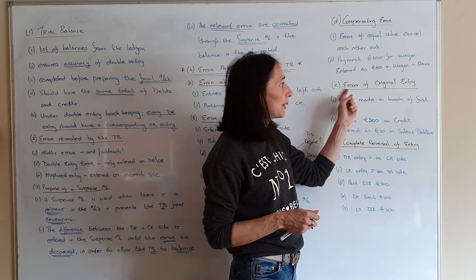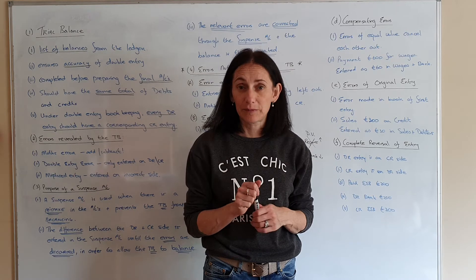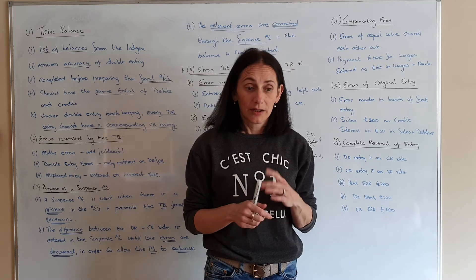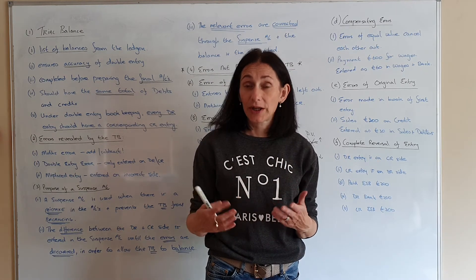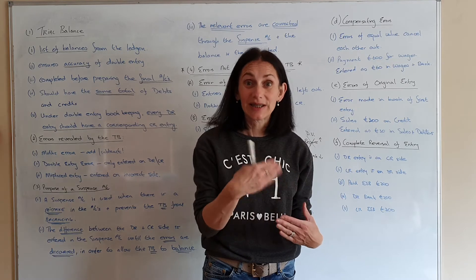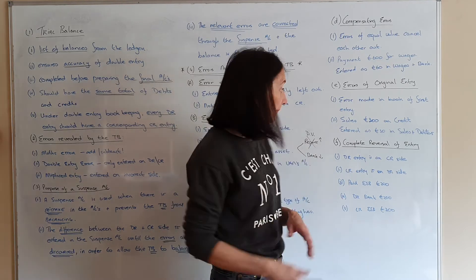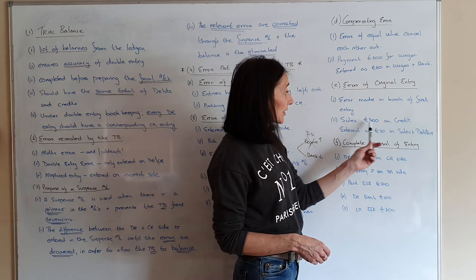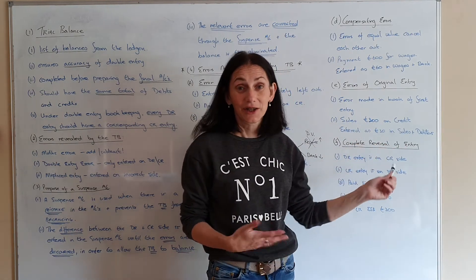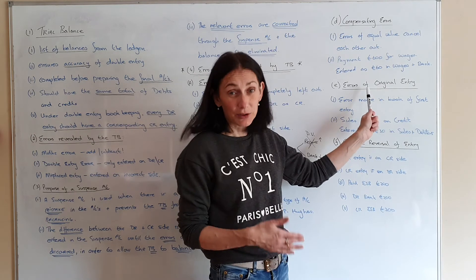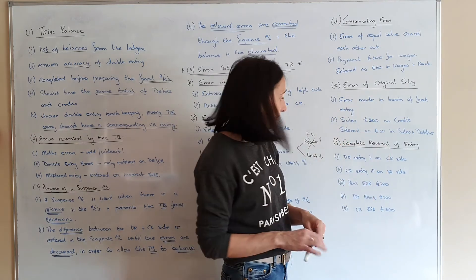Error of original entry: this goes back to your junior cert where you'd have books of first entry. It means in the books of first entry you put in the wrong figure initially to start the accounts off, so you've carried through the wrong figure. For example, say it's 300 in credit and you put it in as 30 instead of 300 — you originally put it in wrong in the books of first entry and carried it through.